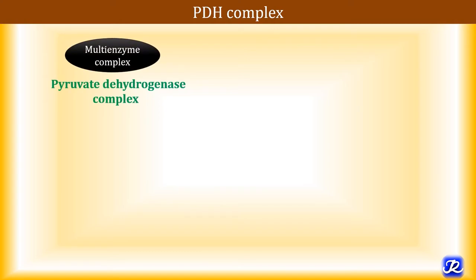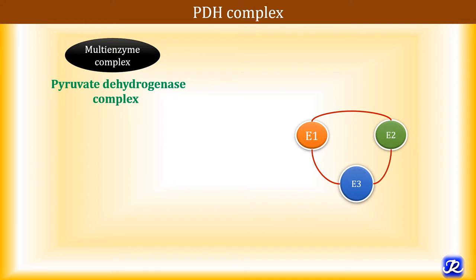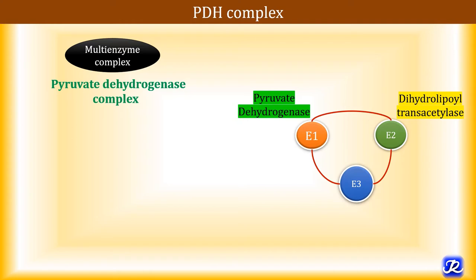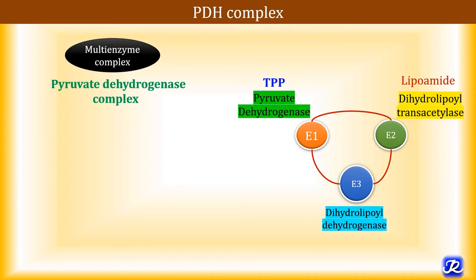Pyruvate dehydrogenase complex is a multi-enzyme complex containing three enzymes: E1 is pyruvate dehydrogenase, E2 is dihydrolipoyl transacetylase, and E3 is dihydrolipoyl dehydrogenase. Each enzyme has an associated coenzyme — thiamine pyrophosphate is associated with E1, lipoamide with E2, and FAD with E3.